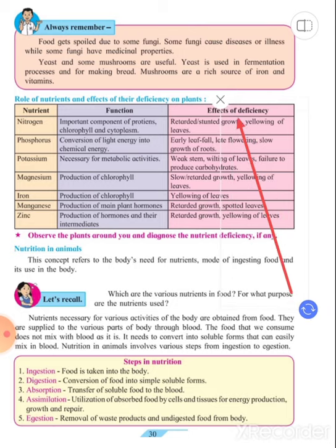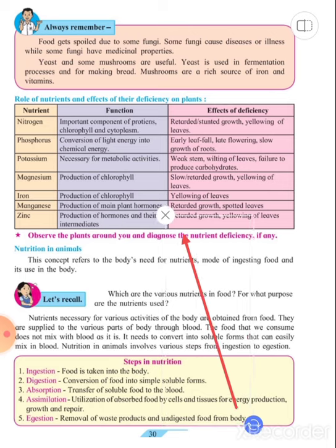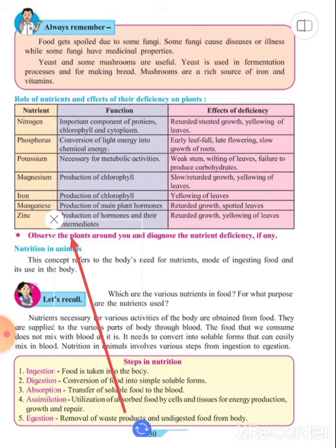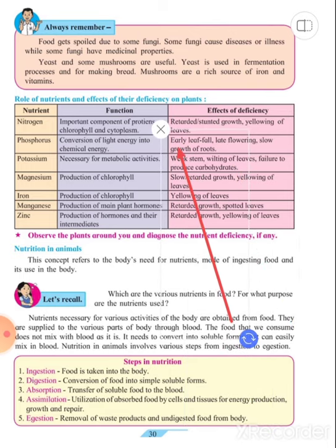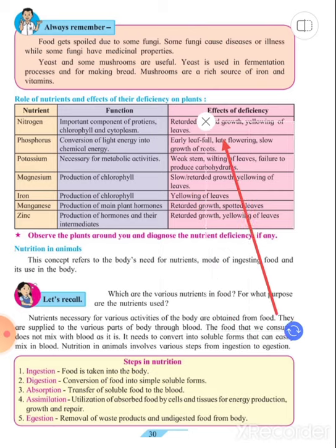So these are the nutrients which are necessary for plants, the functions of that particular nutrient, and effect of the deficiency. Observe the plants around you and diagnose the nutrient deficiency, if any.